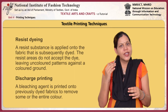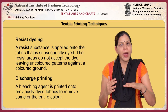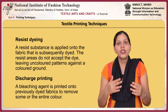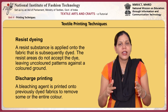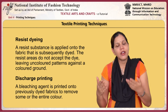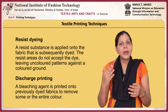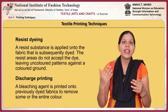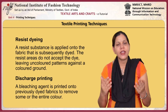In the resist dyeing style, a resist substance is applied onto the fabric that is subsequently dyed. The resist areas do not accept the dye, leaving uncoloured patterns against a coloured ground. In the discharge printing style, a bleaching agent is printed onto previously dyed fabrics to remove some or all of the colour.